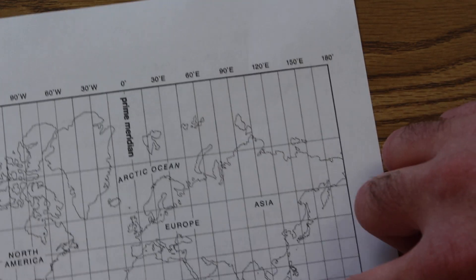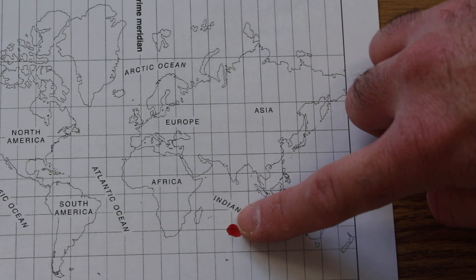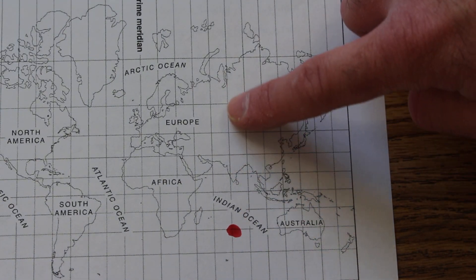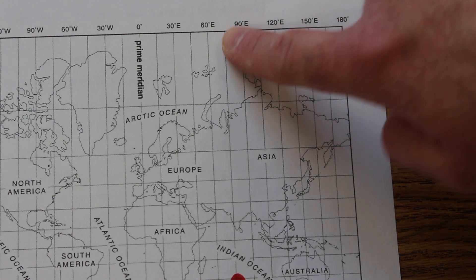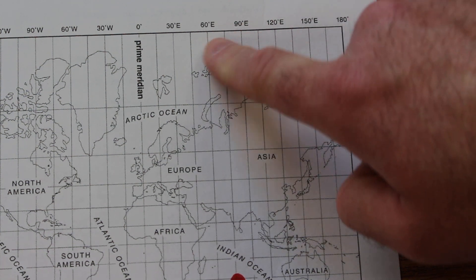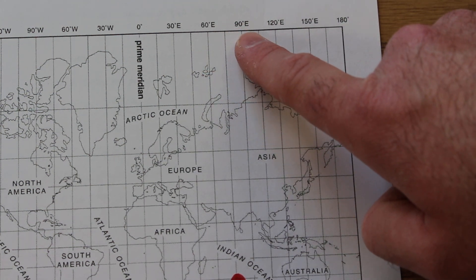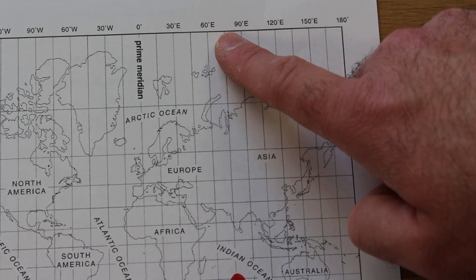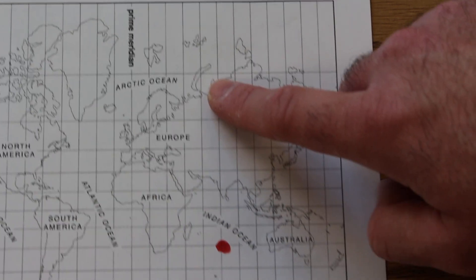And then trace the longitude line up. It falls between 60 degrees east and 90 degrees east, so it must be 75 degrees east.